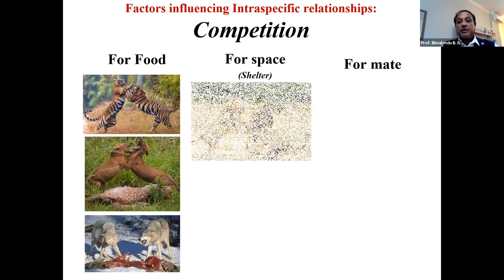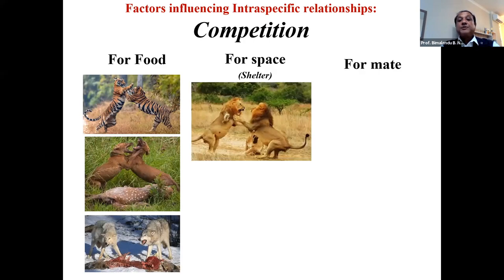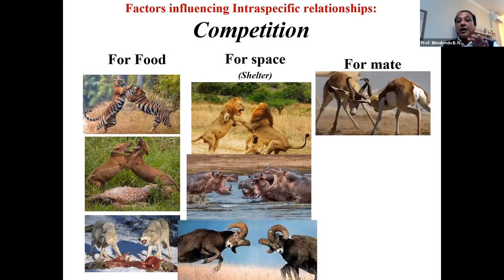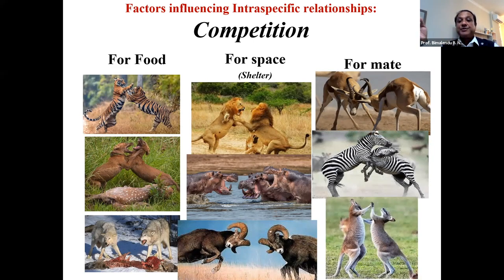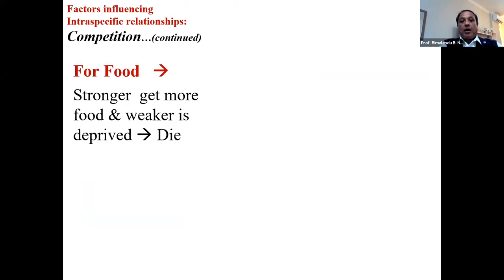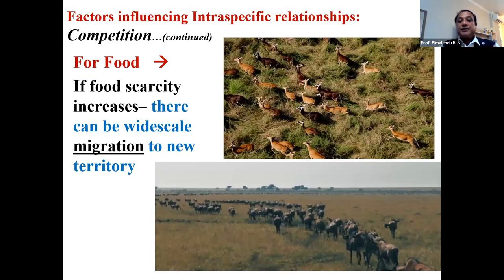Competition within members of the same species for a mate is an important parameter. For food, the stronger get more food while the weaker are deprived. If food scarcity increases, there can be wide-scale migration to new territory as animals search for nutritional resources. So migration is one of the fallouts of competition. Overproduction leads to competition for food, which leads to migration. Food scarcity can also lead to incidences of cannibalism — where animals eat members of their own species. Cannibalism is widespread in many invertebrates and vertebrates.